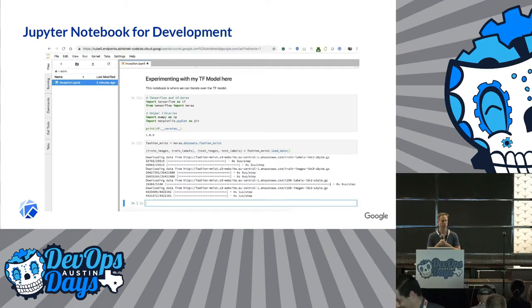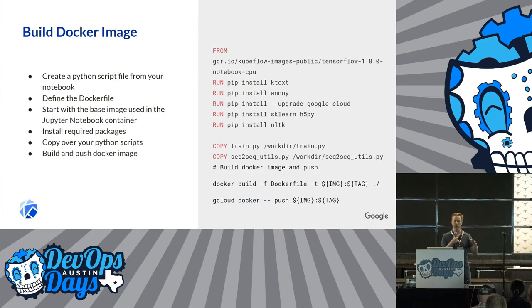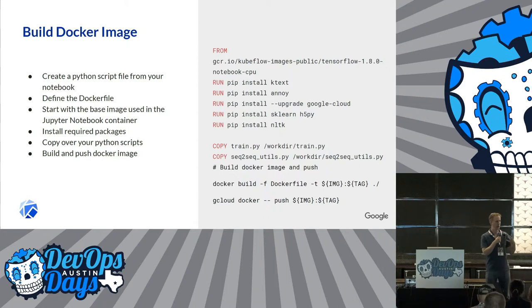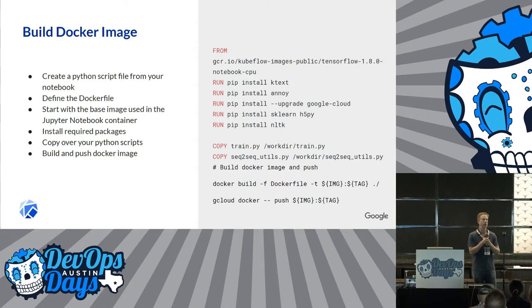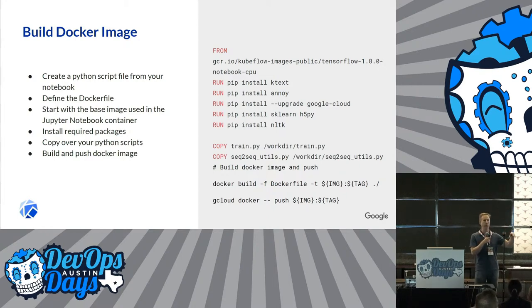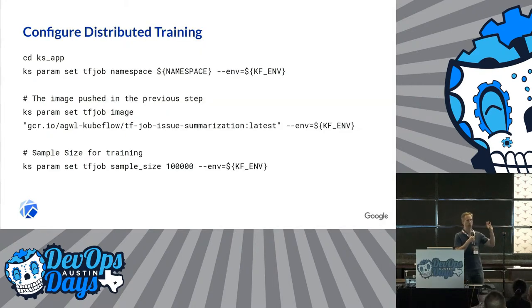You can customize a lot of this. There are default images, but you can go in and change those. What we're seeing next is how you would actually build a Docker image with your training code on it. If you've ever seen a Dockerfile, you create your base image, install your Python packages, and basically copy your code into the image.